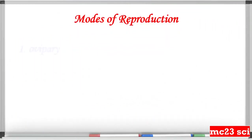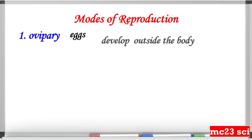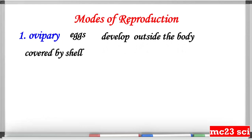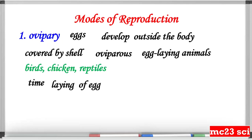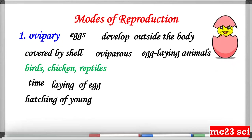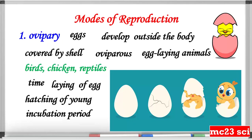The first mode of reproduction is oviparous, where the eggs develop outside the body of the female animal. The eggs are covered by a shell. Oviparous animals are called egg-laying animals, like birds, chicken, and reptiles. The time period from the laying of the egg to the hatching of the young ones is called the incubation period.